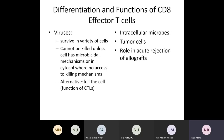Let's talk about differentiation and functions of CD8 effector T lymphocytes. One major function is to help with defense against viruses. Viruses survive in a variety of different cells and cannot be killed unless that particular cell has microbicidal mechanisms. Viruses cannot be killed in the cytosol where no access to killing mechanisms is present. The alternative is for CTLs to kill the cell that's infected. CD8 T cells can also help with defense against intracellular microbes, damaged cells such as tumor cells, and they play a role in acute rejection of allografts.